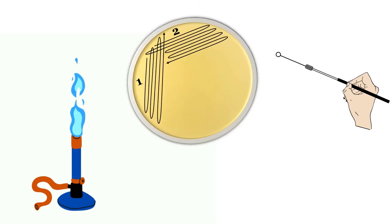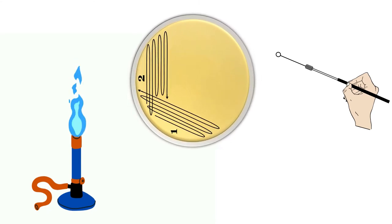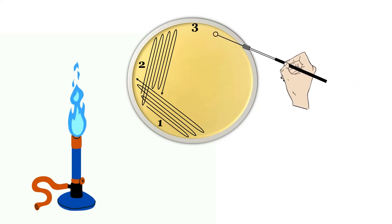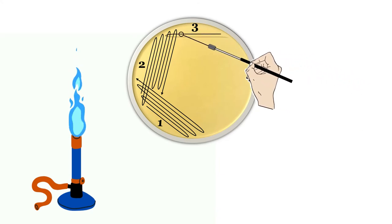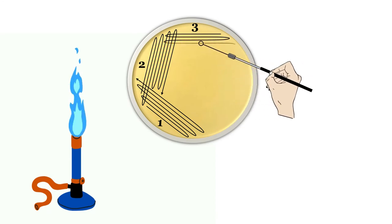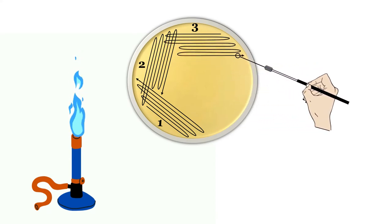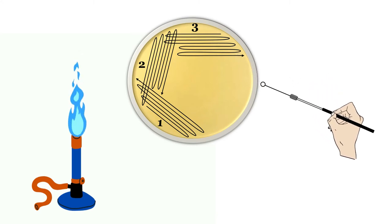Now flame the wire loop again and allow it to cool. Rotate the petri plate less than 90 degrees and the sterile wire loop is placed in the corner of the second quadrant and drag the wire loop and streak in back and forth manner in third quadrant. This step brings a few bacteria from sector 2 into sector 3.